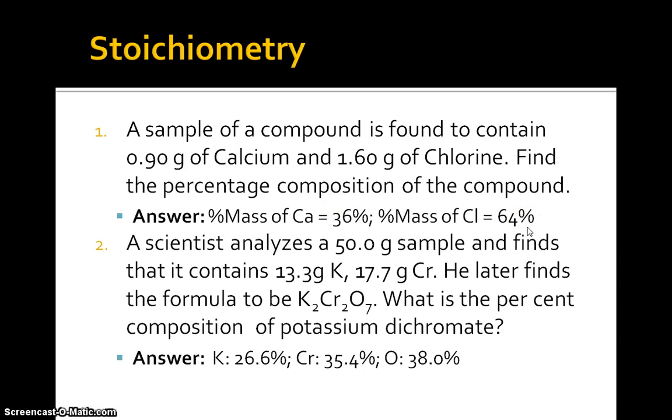A scientist analyzes a 50 gram sample and finds that it contains 13.3 grams of potassium and 17.7 grams of chromium. He later finds the formula to be potassium dichromate, K2Cr2O7. Notice here that there's some oxygen we didn't exactly talk about, but of course we have to consider it. What is the percent composition of potassium dichromate?